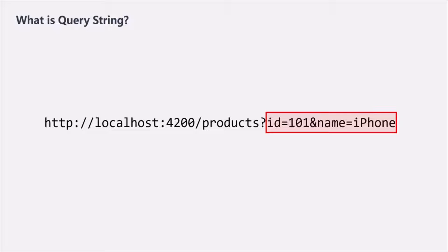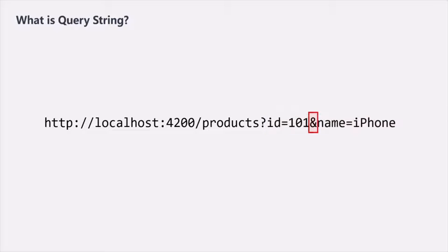In this URL, we are specifying two Query Strings. The first Query String is ID with the value 101, and the second Query String is name with the value iPhone. These two Query Strings are separated by the ampersand. You can specify a Query String after a question mark and specify as many Query Strings as you want, separated by the ampersand sign.